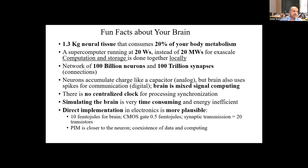The brain is basically mixed signal computing — some analog, some digital-like — and there is no centralized clock as far as one can tell. Simulating the brain is very time-consuming and energy inefficient. A direct implementation of the brain is going to be difficult to achieve. It requires a lot of computation, and we're not there yet, although some organizations are looking in that direction. This is where we start looking at how the brain works and modeling it — that's what the neural network idea came about.